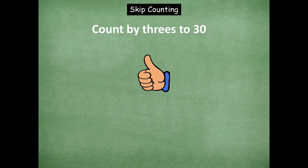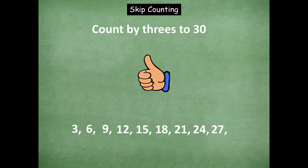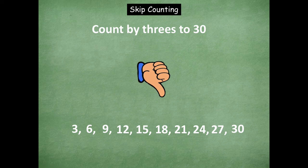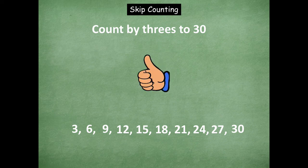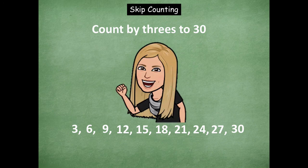Let's skip count by threes, starting going up. Three, six, nine, twelve, fifteen, eighteen, twenty-one, twenty-four, twenty-seven, thirty. Count down. Twenty-seven, twenty-four, twenty-one, eighteen. Stop. Counting up. Twenty-one, twenty-four, twenty-seven, thirty. Great job friends — skip counting by threes to thirty, forwards and backwards.